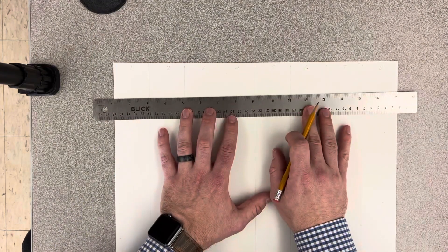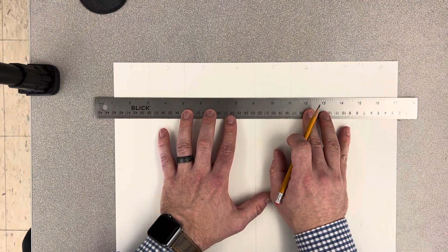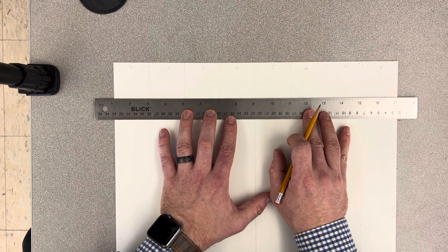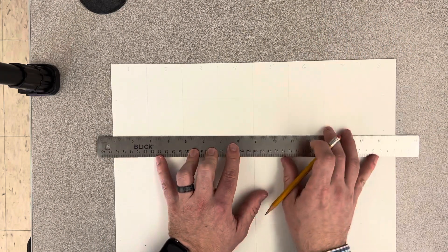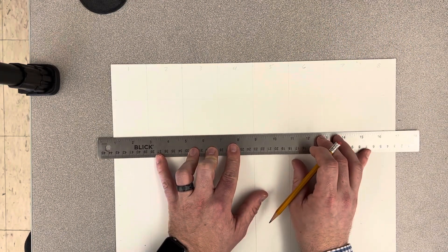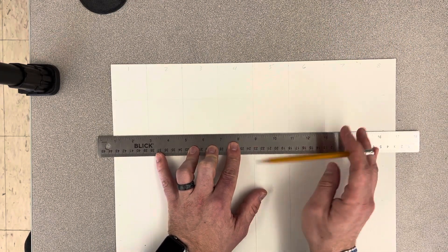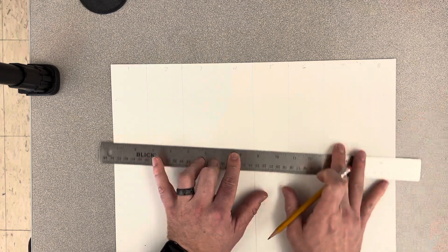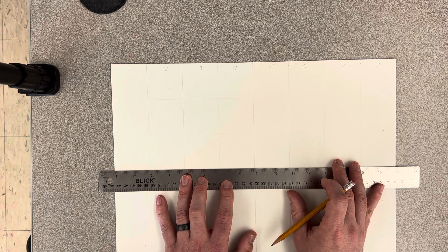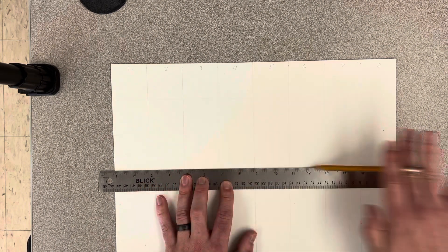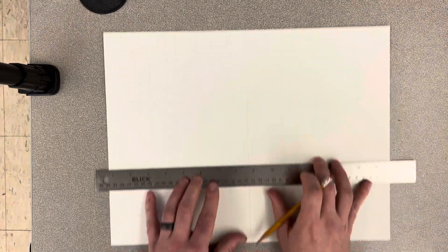Take my ruler, line it up, hold the end of my pencil really lightly, and make these nice rows. Now as I do this, I'm going to keep talking to you about what the next step is going to be when you get your grid done. We're just lightly drawing these lines.